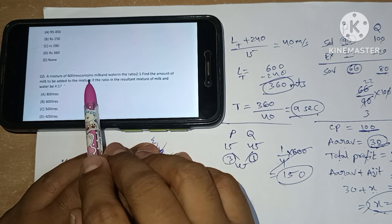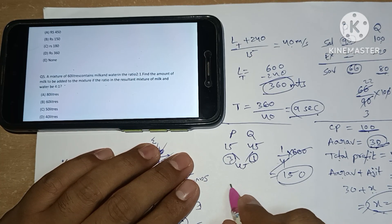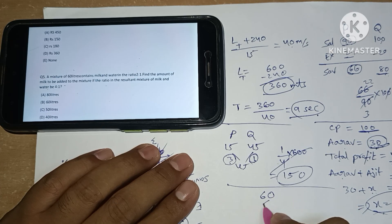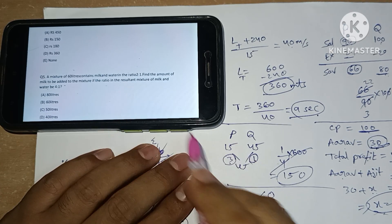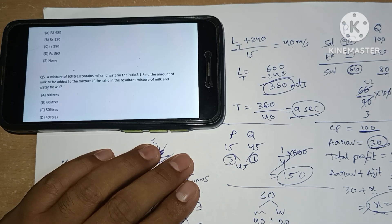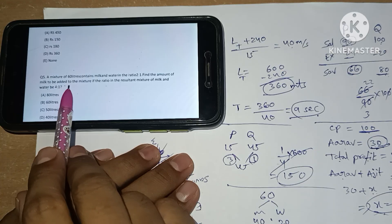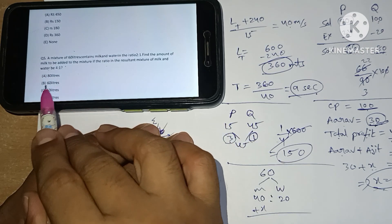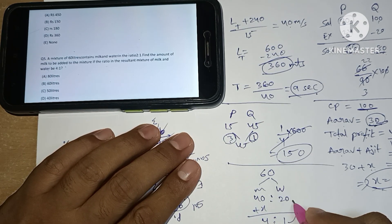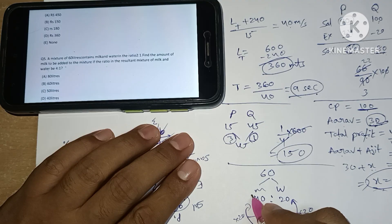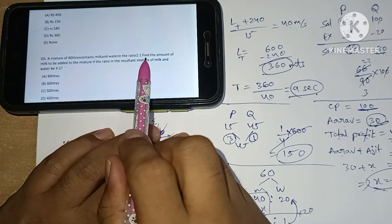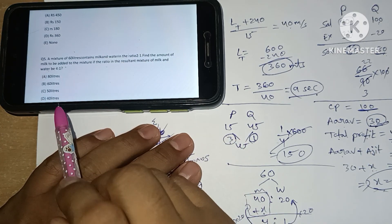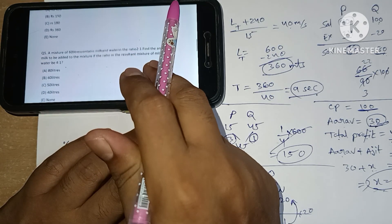Fifth question: a mixture of 60 liters contains milk and water in the ratio 2:1. So milk is 40 liters and water is 20 liters. Find the amount of milk to be added so that the ratio of milk to water in the resultant mixture becomes 4:1. Water stays at 20 liters, so milk must be 4 times 20 = 80. So 40 plus x equals 80, meaning x equals 40 liters. Option D is our answer.